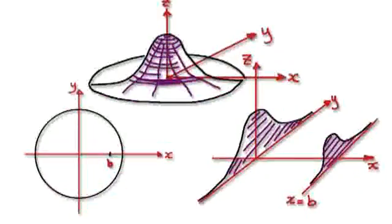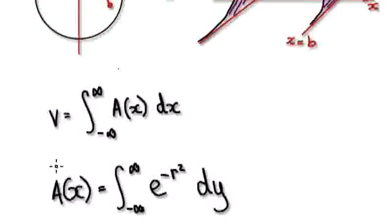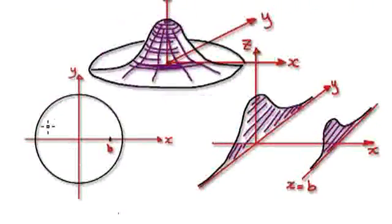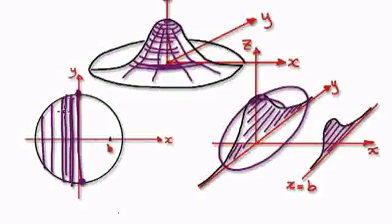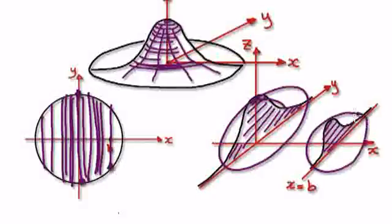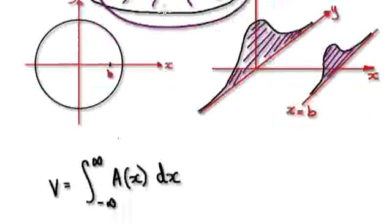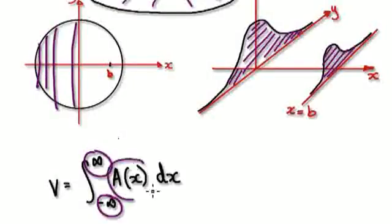Following on from the previous video, let me have another good attempt at explaining why the area here is given by this. So we were trying to work out the volume of this solid here, and we're going to sum up all the slices. By the time it gets to x equals b, it will be this slice here. We're summing up all the slices from negative infinity to positive infinity, so the volume is given by summing up all the areas from negative infinity to positive infinity.